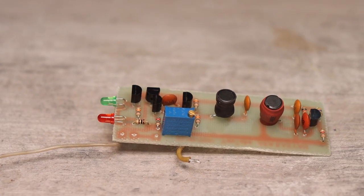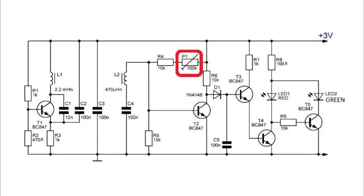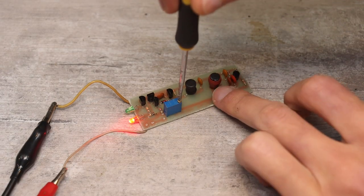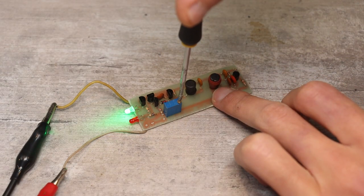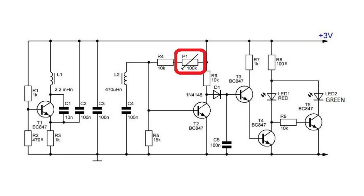The setup of the detector is as follows. We rotate the tuning resistor until the red LED goes out and the green one lights up. This resistor provides the sensitivity control of the device.